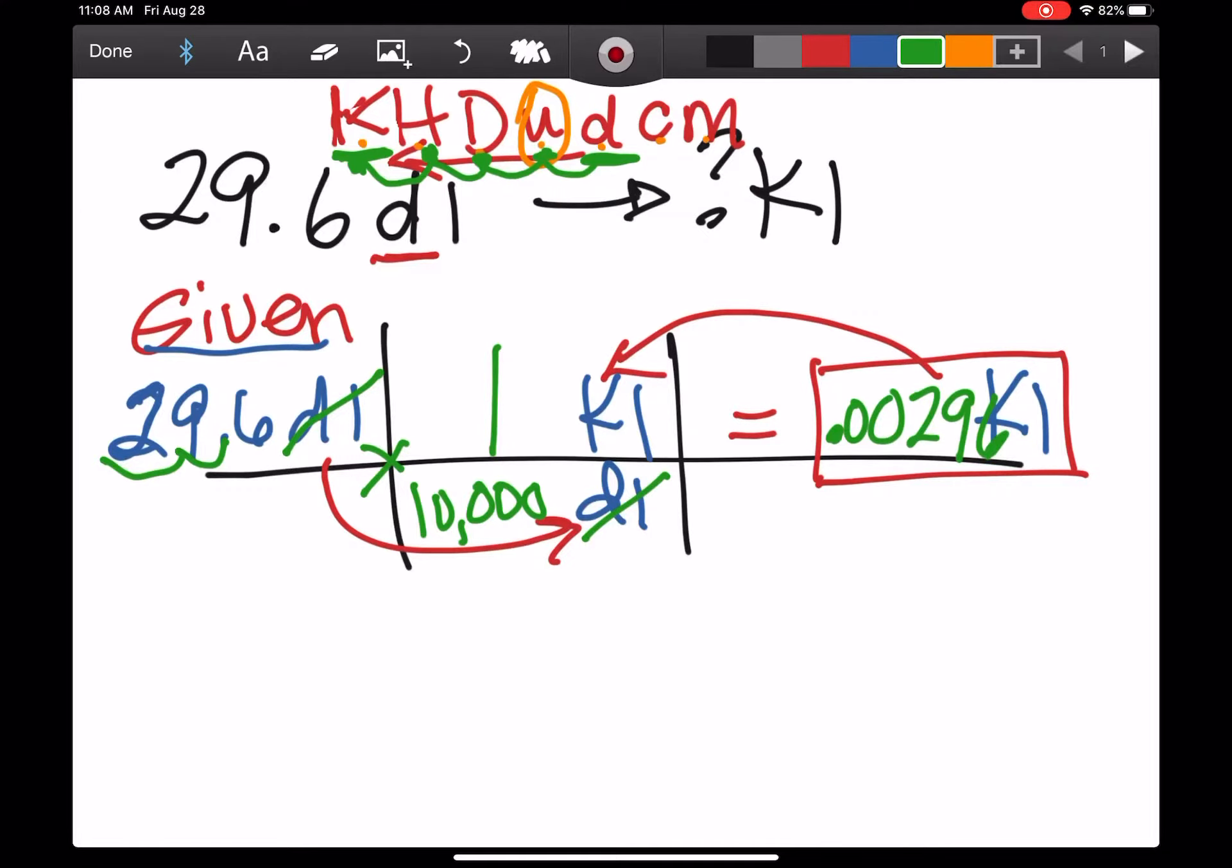0.00296 for the answer there. Remember when you're doing the math, you multiply across the top and divide by what's on the bottom. So across the top is times, whatever is on the bottom is divide. I'm going to do one more problem.